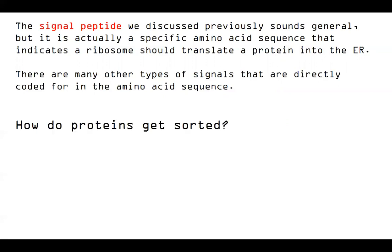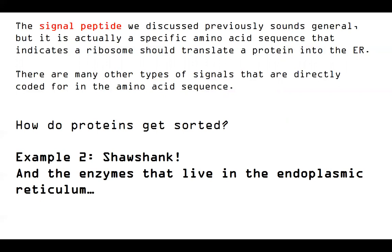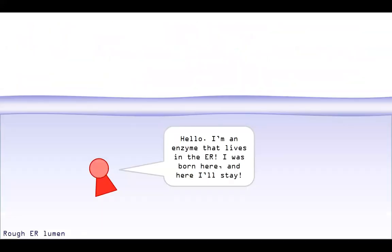In our next example, we're going to look at another time when the signal is directly coded for by the amino acid sequence. So how do proteins get sorted? Example two, I like to call this Shawshank, but this is for enzymes that live in the endoplasmic reticulum. So I don't want you guys to get confused. Anything that gets translated into the rough ER must have at one point had a signal peptide that we discussed in the last video. We, in this video, discussed that mannose six phosphate modification that allowed us to go to the lysosome. The second example is a completely separate example. It's a different case for when enzymes actually live in the endoplasmic reticulum. That's where they work and do their job. So let's head back to that rough ER lumen.